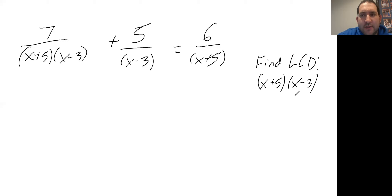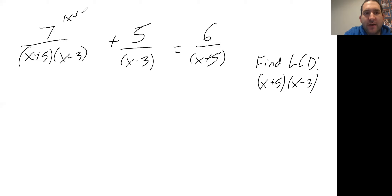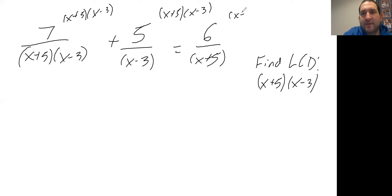Our next step is to multiply by the LCD to get rid of the fractions. Our LCD is (X + 5)(X − 3), so we multiply each of these fractions by that. Seven gets multiplied by (X + 5)(X − 3), five gets multiplied by (X + 5)(X − 3), and six gets multiplied by (X + 5)(X − 3).